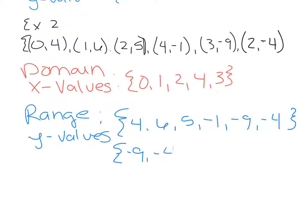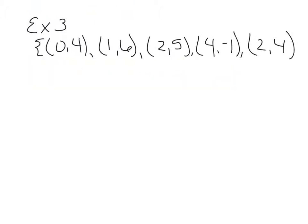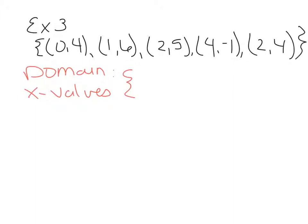For example 3, we have a new relation and again we are being asked to identify the domain and range. The domain is the set of all x values. Looking for the x values: 0, 1, 2, 4, 2 — and the 2 is listed twice, so we only put it once in our set for domain. So the domain is 0, 1, 2, 4.